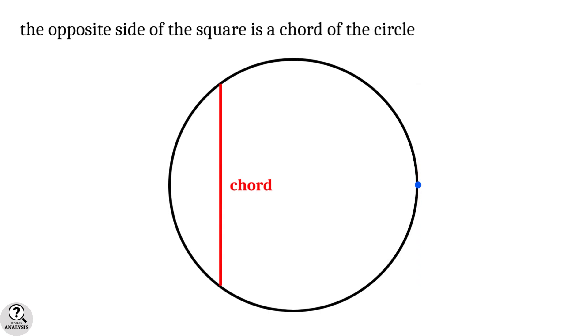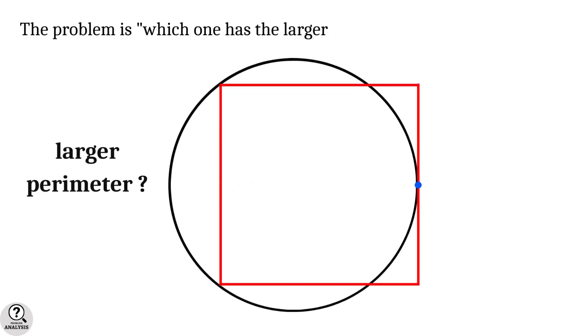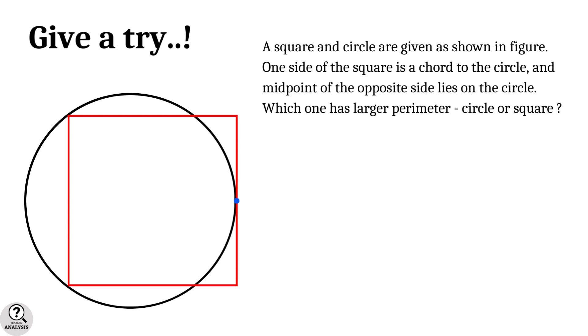Now my problem is: which one has the larger perimeter, the square or the circle? If you want to attempt the problem, pause the video and just give it a try.